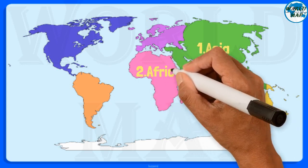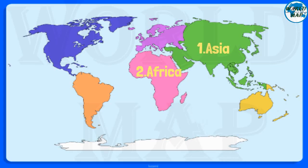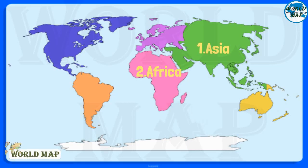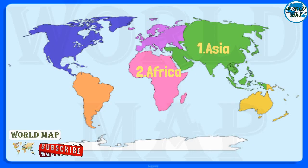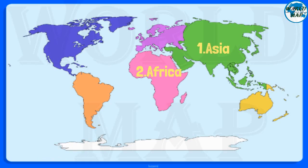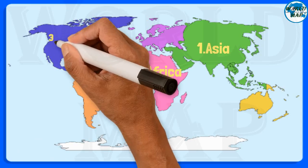Number 2: Africa. It is the second largest continent in the world after Asia, both by area and population. It comprises 54 countries and over 16% of the world's population.